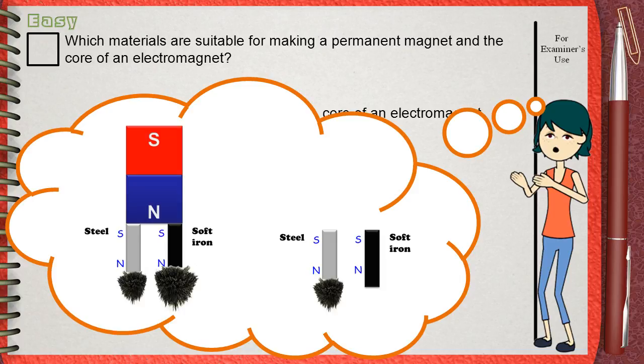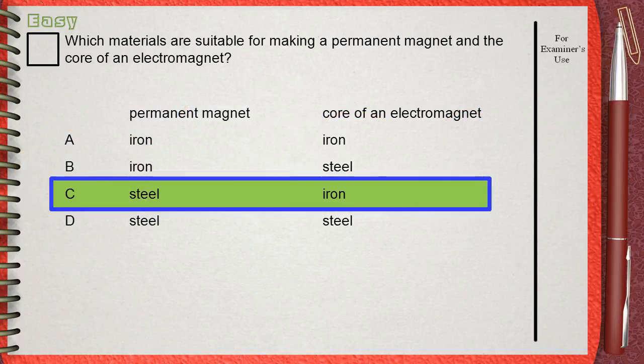So it's clear that the answer is C. Steel is suitable for a permanent magnet because it keeps the magnetic property for a long time. Iron is suitable for the core of an electromagnet because it acquires the magnetic property easily and loses it easily.